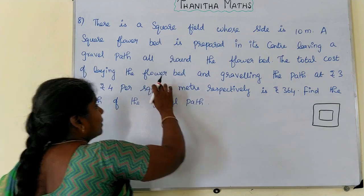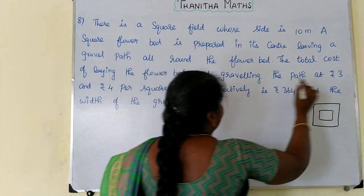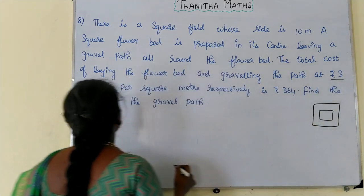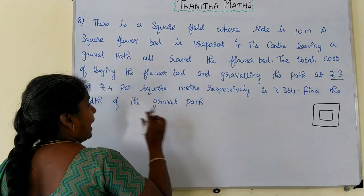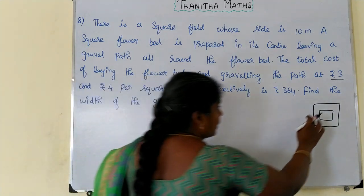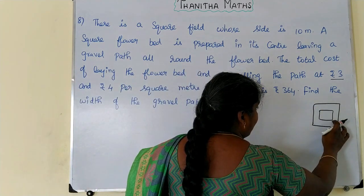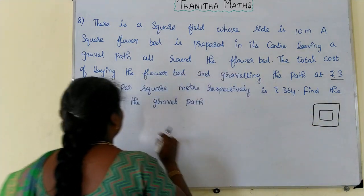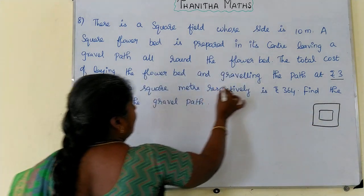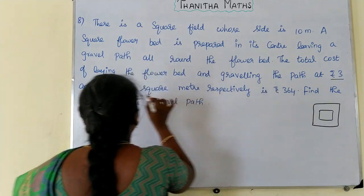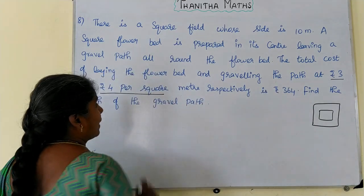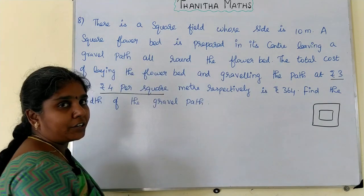The cost of laying the flower bed is rupees 3 per square meter, and the cost of graveling the path is rupees 4 per square meter.